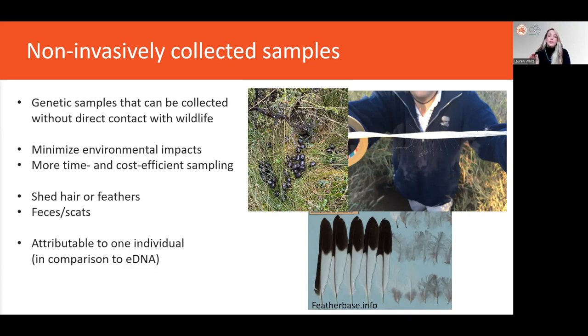They're attributable, that's to say they are attributable to one individual. If you find a feather, you know that came from a single bird, and this distinguishes them from environmental DNA or eDNA, which is DNA extracted from the broader environment such as soil or water samples. It's more difficult to attribute eDNA to a single individual of a species, and there are other modules in the open course that cover eDNA for those who are interested.